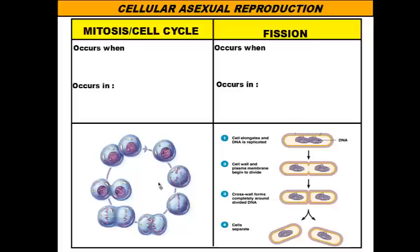Hi there, boys and girls. Welcome to our vodcast on asexual reproduction. There are two different ways that an organism can reproduce — either sexually or asexually — and today we're going to talk about the characteristics and types of asexual reproduction.